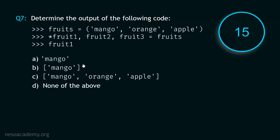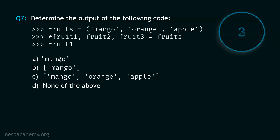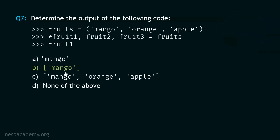Here comes question number 7, and your time starts now. The correct option is option A. The correct option is option B: Mango within square brackets.